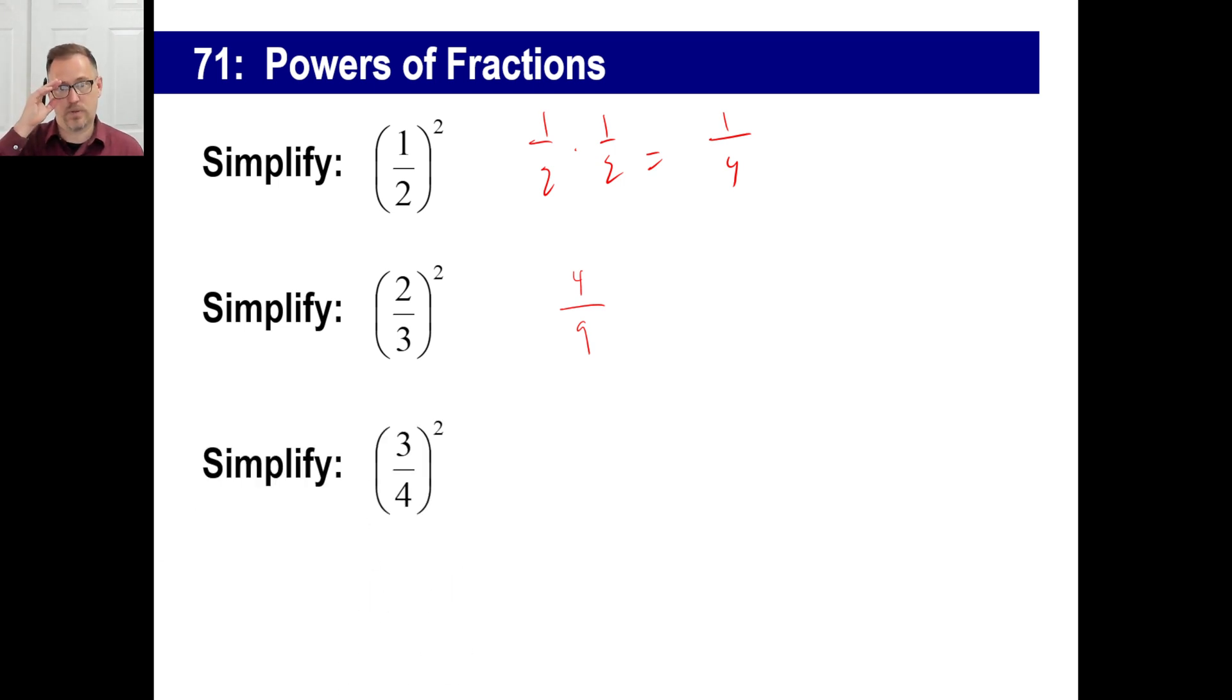If you have three fourths squared, same thing. It just means three fourths times three fourths. You don't have to write it twice. It just means three times three is nine. Four times four is 16.